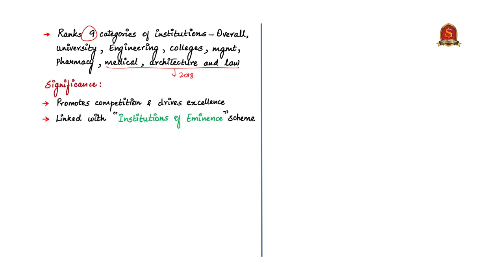These rankings promote competition among universities and drive them to strive for excellence, which is important for improving the higher education scenario of the country. These rankings are also linked with the Institutions of Eminence scheme, launched by the Ministry of Human Resource and Development, which aims to bring Indian institutions to global eminence. The top 50 institutes of NIRF rankings and the top 500 globally ranked institutions will be eligible to apply for the eminence tag, which comes with special government funding and complete academic and administrative autonomy.